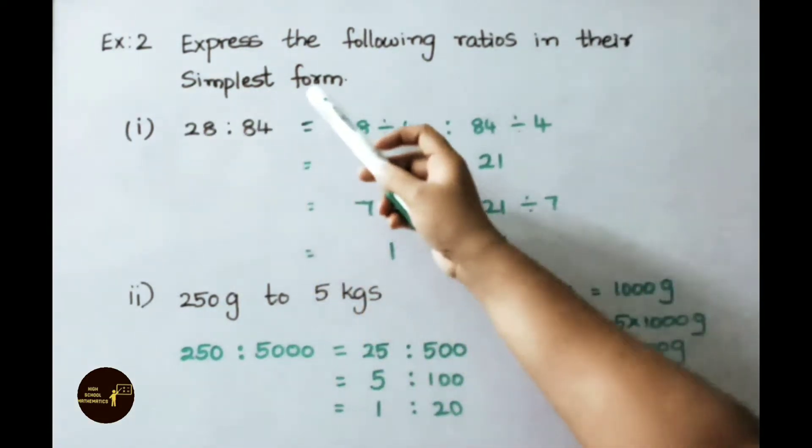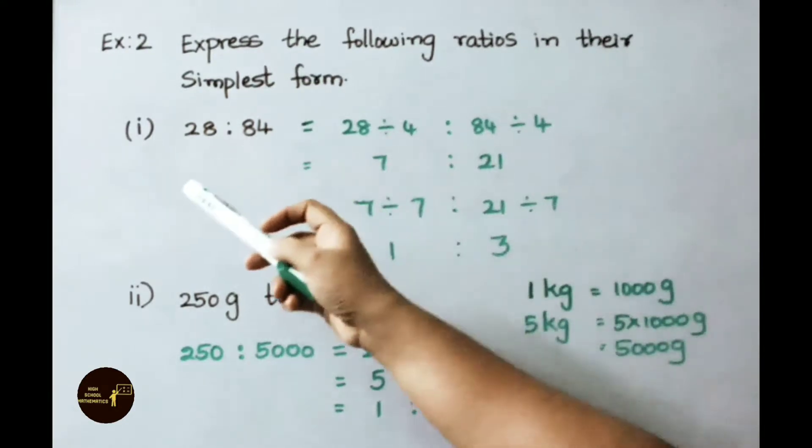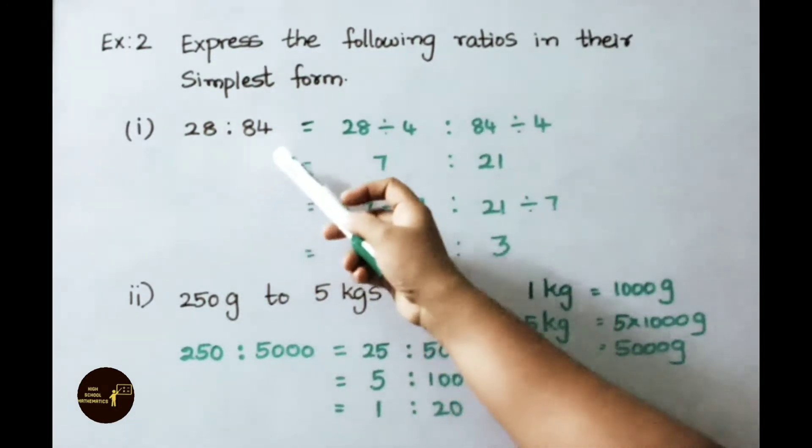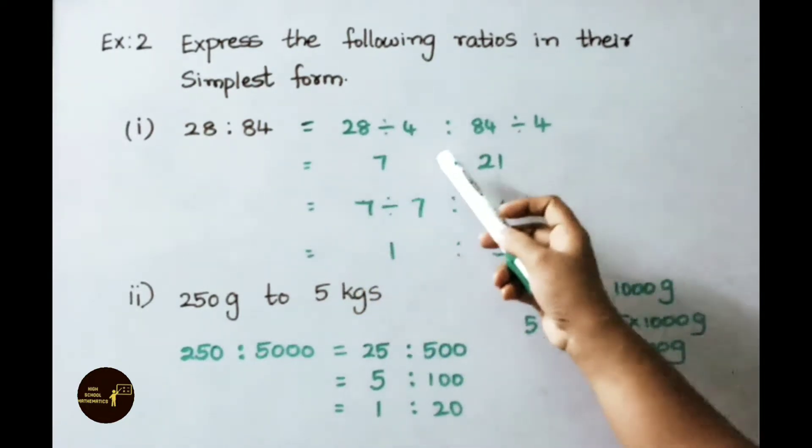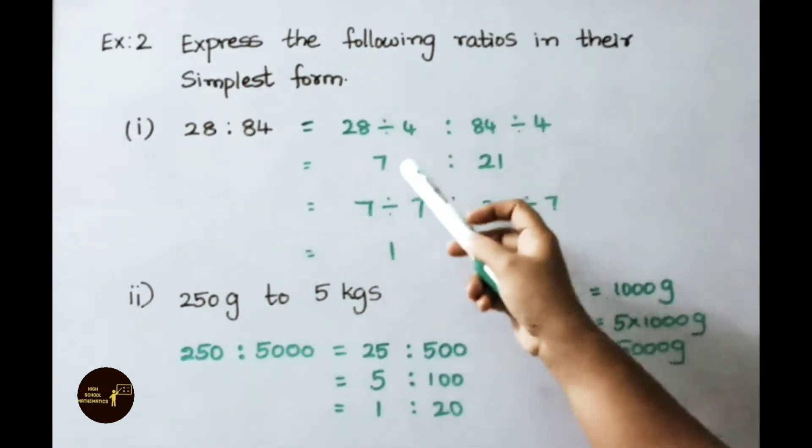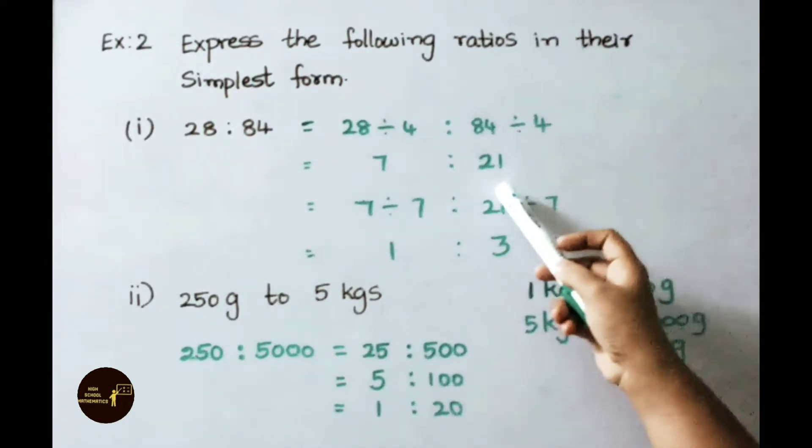See now example 2. Express the following ratios in their simplest form. See the first one 28 is to 84. We have divided both the terms with 4. 4 table 28 is 7 times. 4 table 84 is 21 times. So we got 7 is to 21.